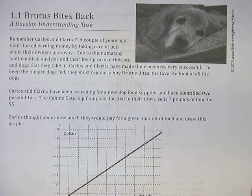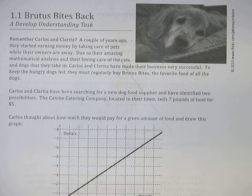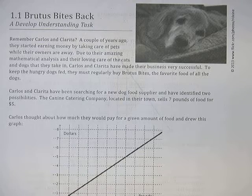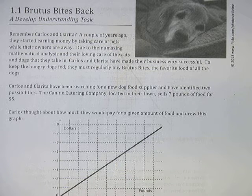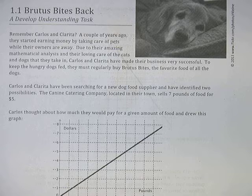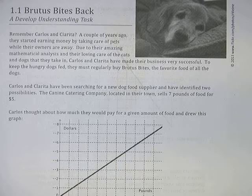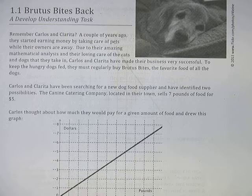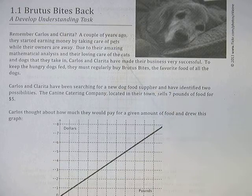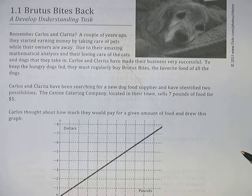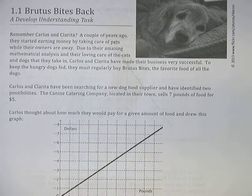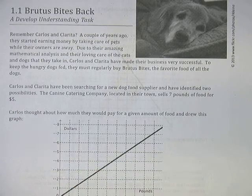Here we go. This is task 1.1, Brutus Bites Back. We are in math three, using the integrated math three from the Mathematics Vision Project. As usual, these materials come out of Utah. So we are once again back with Carlos and Clarita. We've been following them since math one on their business ventures. Back in math one, they started taking care of pets, and it's apparently turned into a very successful business. They are wanting to find a new dog food supplier for their pet sitting business, and they have a food called Brutus Bites, and that is what the dogs eat. They have two possibilities for a new supplier for their dog food. We're going to look first at the Canine Catering Company. They sell seven pounds of food for five dollars.